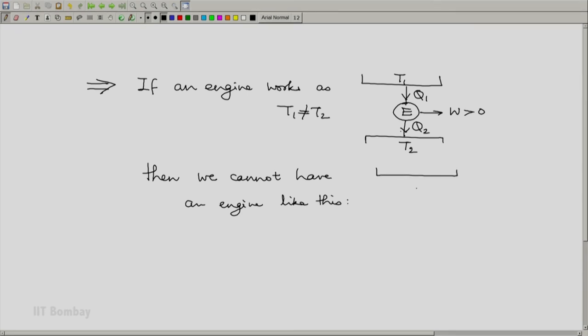then we cannot have an engine like this. And what is that engine like this? It is an engine which works between the same two reservoirs, T1 and T2, but absorbs from T2, rejects to Q1, and produces W prime greater than 0. So if this is true, this is not true.